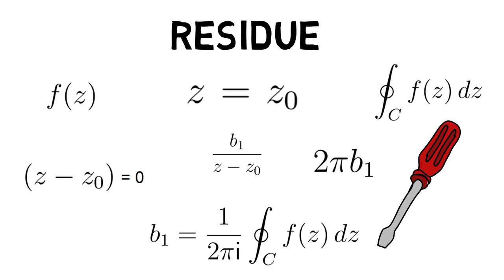it is called Residue of f at z equals z0 and is given by b1 equals 1 upon 2πi times the closed integral of f dz about c.